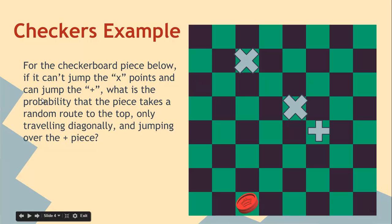So the checker B piece below, if it can't jump the X but it can jump the plus, what is the probability that the piece takes a random route to the top only traveling diagonally and jumping over the plus piece? So the first thing you need to decide is how many ways to get to the top row and then how many ways go through that plus piece.